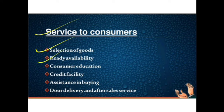The second service to consumers is ready availability. A retailer holds stock of various goods produced by different manufacturers and is prepared to sell goods in small quantities to customers. It enables buyers to choose products as per their taste and to buy them as and when they are needed. So the second service is ready availability, or regular availability of products.